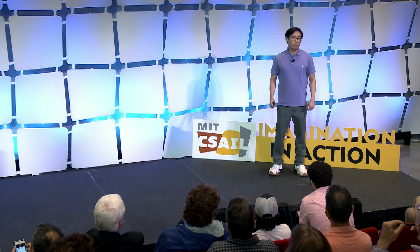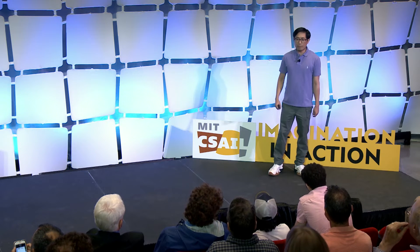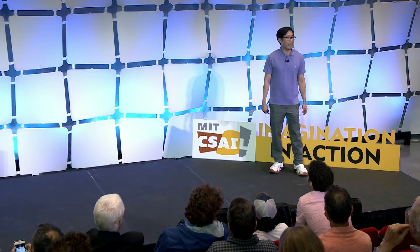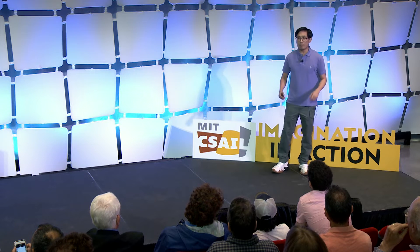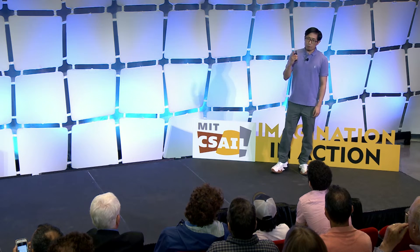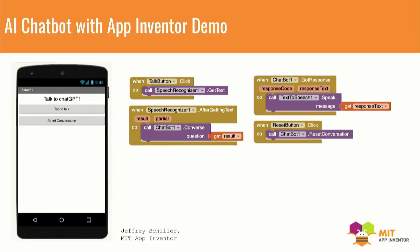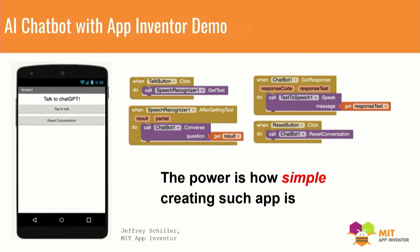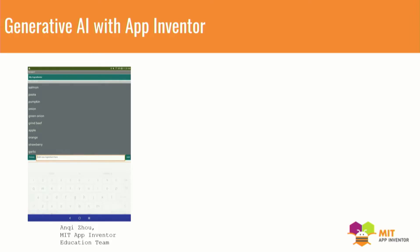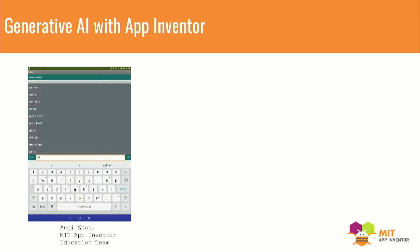But I know there are many smart people here, and some of you might be thinking: what's so special about that? That's just an app using an API. But it's not really the technical innovation I want to emphasize here, but rather how simple it is to create this app. This app is two buttons and a few blocks — even a ten-year-old can create this. And what our team believes is that because of this simplicity, kids will be able to create much more interesting and fun apps on top of it.